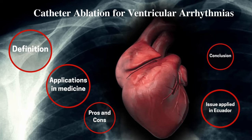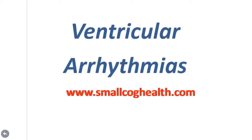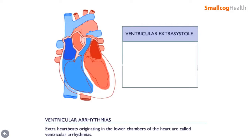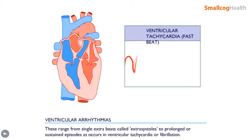Catheter ablation for ventricular arrhythmias. When an abnormal heart rhythm comes from the lower chambers of the heart — the ventricles — it is called a ventricular arrhythmia. Rhythms of this type include ventricular tachycardia and ventricular fibrillation. Extra heartbeats originating in the lower chambers range from single extra beats called extra systoles to prolonged or sustained episodes as occurs in ventricular tachycardia or fibrillation.